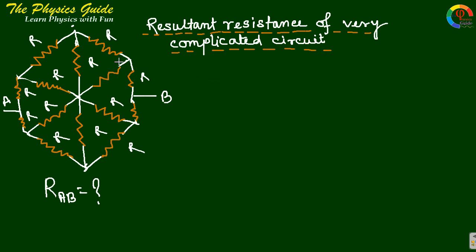This is a very complicated problem, but if we know the tricks then this can be easier. We have to measure the resultant resistance of this complicated circuit. We are seeing that this is a combination of a very large number of resistances. But it would be easy if we change this circuit to a simplified equivalent circuit.